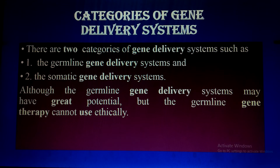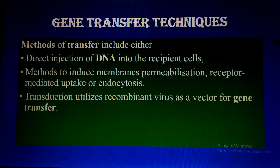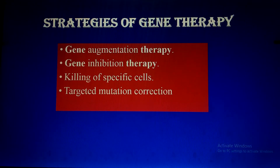The two categories of gene delivery systems are germline and somatic. In germline delivery, egg and sperm cells are involved; somatic refers to cells other than germ cells. Although the germline gene delivery system may have great potential, germline gene therapy cannot be used ethically. Gene transfer techniques include direct injection of DNA into the recipient cell, methods to induce membrane permeability or receptor-mediated endocytosis using nanoparticles, and transduction utilizing recombinant viruses as vectors.